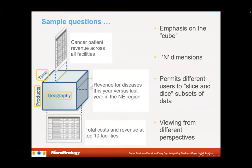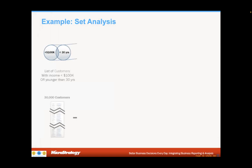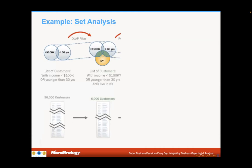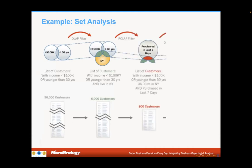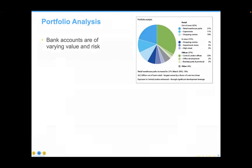This type of arrangement permits different uses — people can dive in and look at cancer patient revenue, revenue for disease in the Northeast region, or total costs for the top 10 perspectives. More specifically, you might take a large data set and cut it down: everyone with income less than $100,000 or younger than 30 who lives in New York — going from 30,000 customers to 6,000 customers who purchased something in the last seven days, down to 800 customers. You could not do that without the data structures preexisting — very difficult to do in real time without good data structuring.